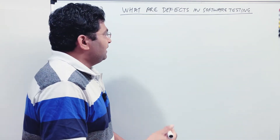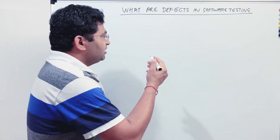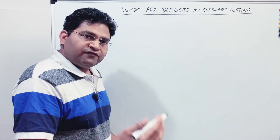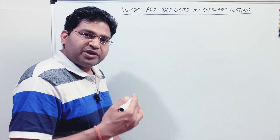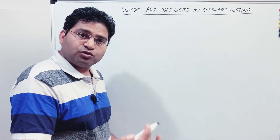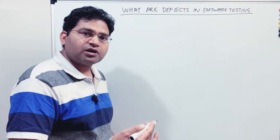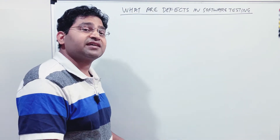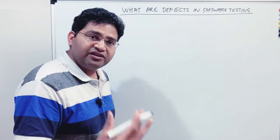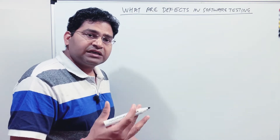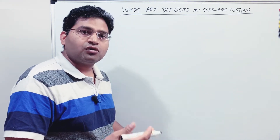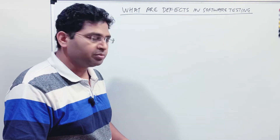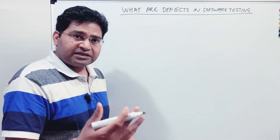When the tester is doing the testing, if the actual result for a particular test case or scenario is not as expected, then that deviation is known as a defect or bug in the software. It's very simple — let me take an example to explain this.